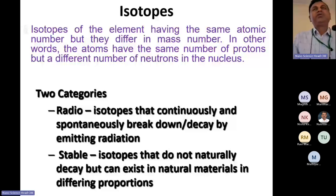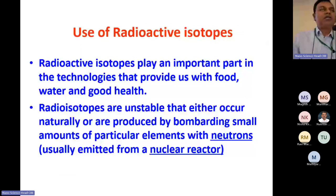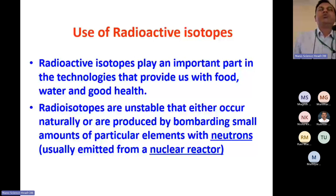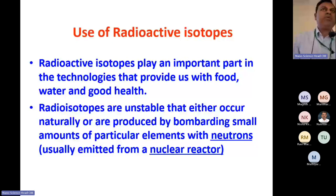Radioisotopes have various uses in the medical industry as well as in agriculture. In the medical field, cobalt-60 is widely used. Radioisotopes are basically unstable; they occur naturally or are produced by bombarding elements with neutrons emitted from nuclear reactors. They are either found in nature or, if higher concentrations are needed, produced in cyclotrons or nuclear reactors.